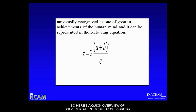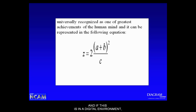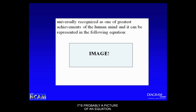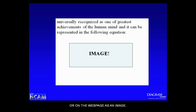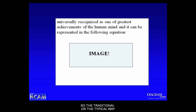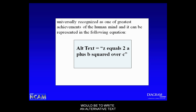Here's a quick overview of what a student might encounter reading a math textbook and coming across an equation. In a digital environment, it's probably not actually an equation — it's a picture of one, usually a JPEG or image file put in because it looks good. It may have started as an actual equation, but it's probably in the textbook or on the web page as an image, which is inaccessible for someone using a screen reader.